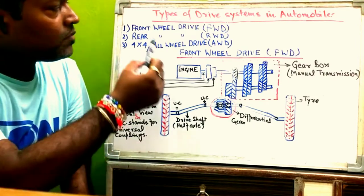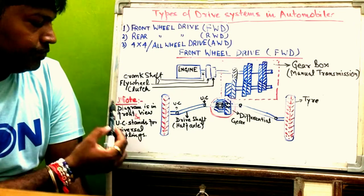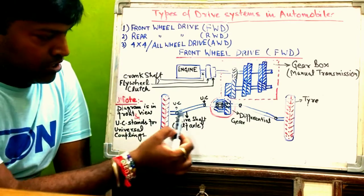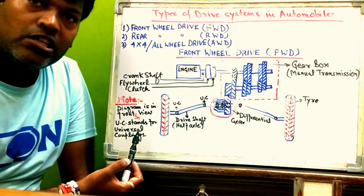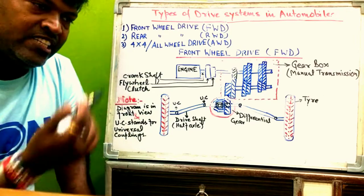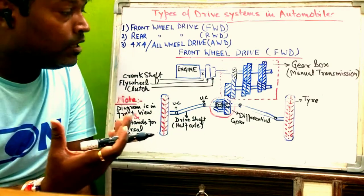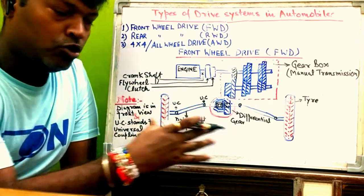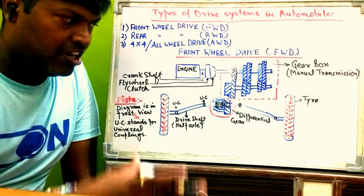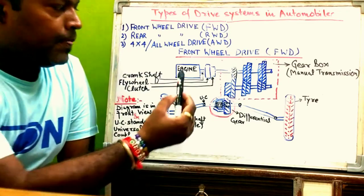Before explaining, please note that the diagram is in front view. The 'U' you see in the diagram stands for universal coupling. In engineering drawing, when you observe any object from the front side, that view is known as the front view — so here we are observing the vehicle chassis from the front side.